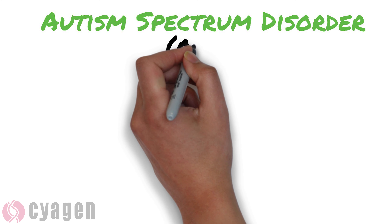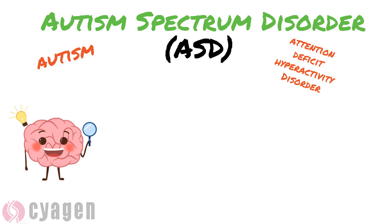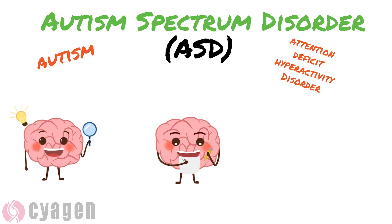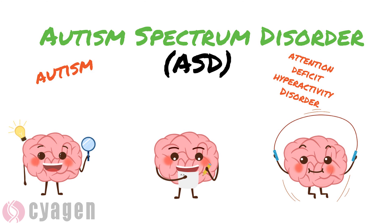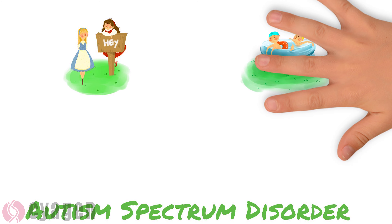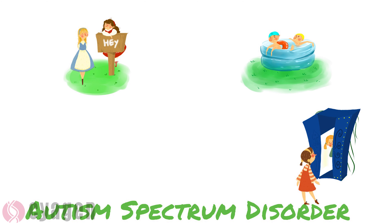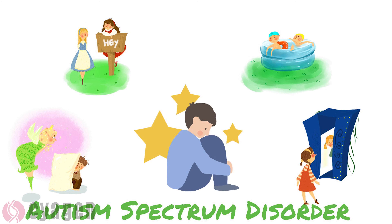ASD is the clinical definition for autism and is related to attention deficit hyperactivity disorder. It affects how a person acts, learns, communicates, and interacts with others. Due to the lack of appropriate interpersonal communication and interaction skills and restricted or repetitive interests or behaviors, it is difficult for autistic patients to understand other people's emotions and express their own feelings.